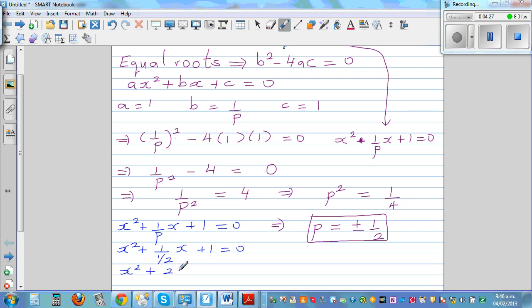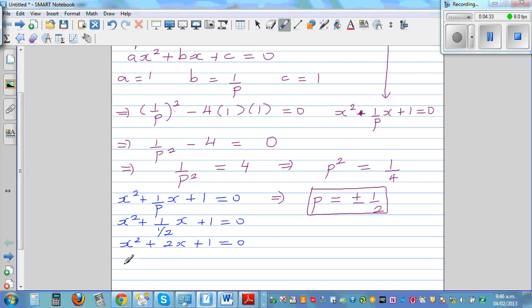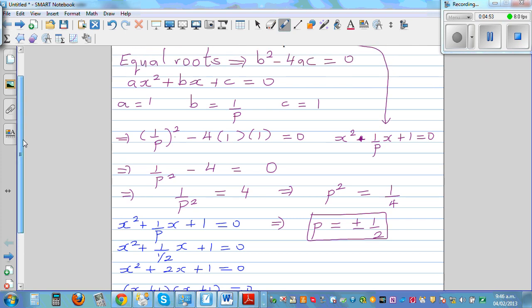And 1 over half is same as 2x, which is 2x plus 1 is equal to 0. And now this is a perfect square of x plus 1 times x plus 1 is equal to 0. And that means x is equal to 1. There's only one root or equal root. So basically this equal root means only one root.